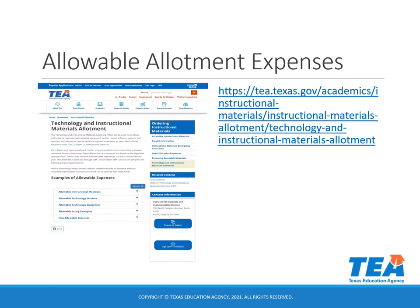On the TEA website, on the top of the main instructional materials webpage, there is a link to the technology and instructional materials allotment. At this link, you can find examples of allowable and non-allowable expenses.